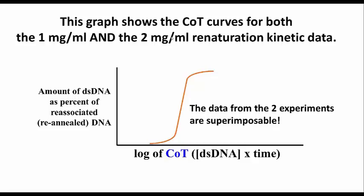That makes sense since bacterial DNA is made up of unique sequence DNA, whether you start with two milligrams per mil, one milligram per mil, or ten milligrams per mil. So I hope that kind of gives you an idea of why CoT data allows you to superimpose renaturation kinetic data from two or more different samples or sources of DNA.